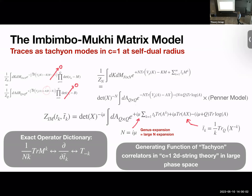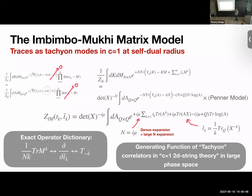This one-matrix integral turns out to be what's called the Itzykson-Zuber matrix model. Why is it useful? By taking derivatives with respect to t_k or t-bar_k, I can compute correlation functions in the c=1 2D string theory of certain tachyon operators. The equality between the top and bottom lines allows me to take a derivative with respect to t-bar_k, which brings down a factor of trace M to the k, and on the other side inserts a negative-momentum tachyon.